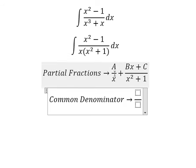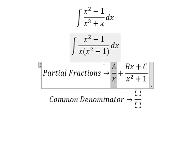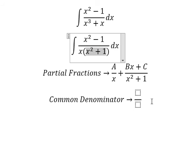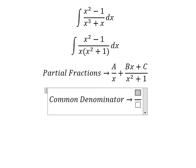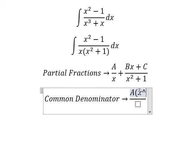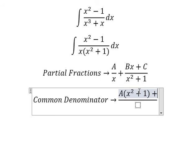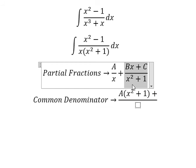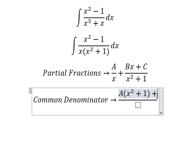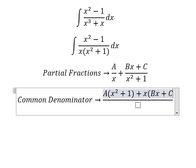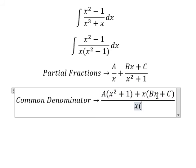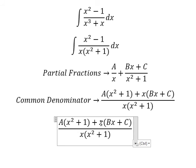For this term, it is missing about x squared plus one, so capital A is multiplied by x squared plus one. For this term, it is missing about x. Now we need to expand this.